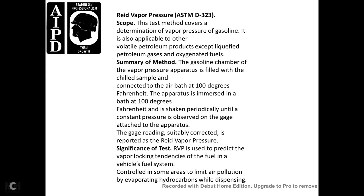Reid Vapor Pressure — ASTM D323. Scope: covers determination of vapor pressure of gasoline and is applicable to other volatile petroleum products except liquefied petroleum gas, oxygenated fuels, and swimming pool variants. Summary: the vapor pressure apparatus is filled with two samples, connected to an air bath at 100°F, immersed in the bath, shaken periodically until a constant pressure is observed on the attached gauge, and the gauge reading is suitably corrected for Reid vapor pressure. Significance: used to predict vapor locking tendency of fuel and to control air pollution from evaporating hydrocarbons.